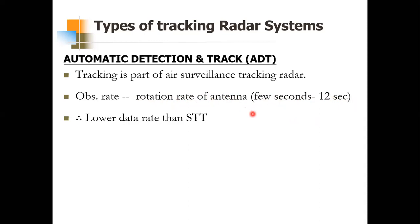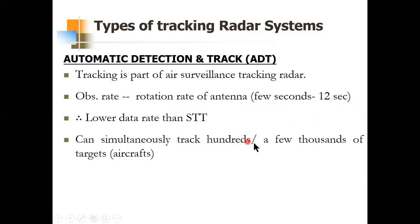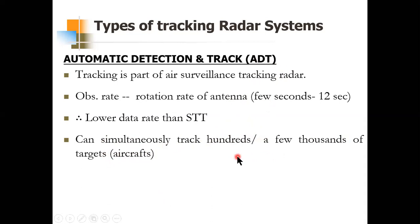The advantage of ADT is that it can simultaneously track many hundreds or even a few thousands of targets at the same time. Another difference between STT and ADT is that while STT functions in a closed-loop servo system, ADT tracking is done in an open-loop method. Hence, the antenna position is not controlled by the data obtained from processing the target.